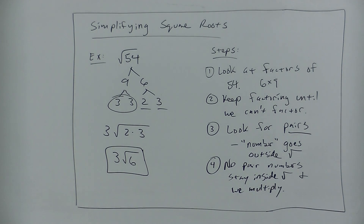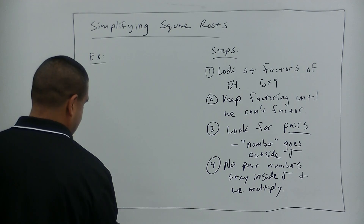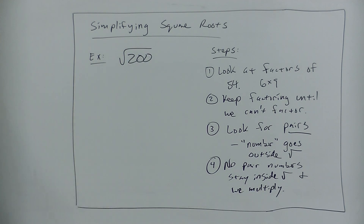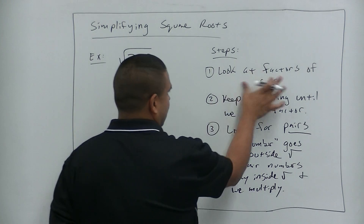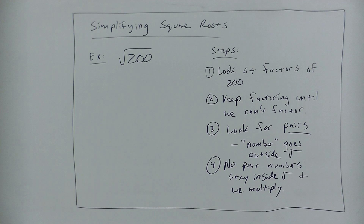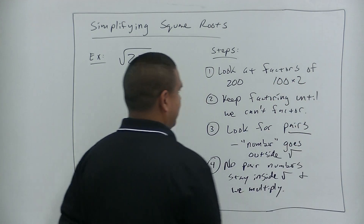Does that make sense? Alright, let's try another one. I'm going to leave the steps right here and let's try to simplify the square root of 200. So we're going to look at factors of 200. What are the factors of 200? 100 times 2. Good, so we know 100 times 2 would work.